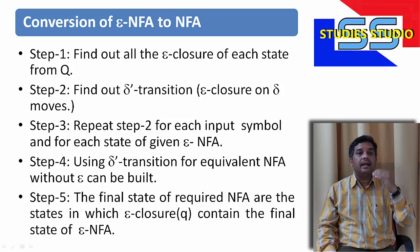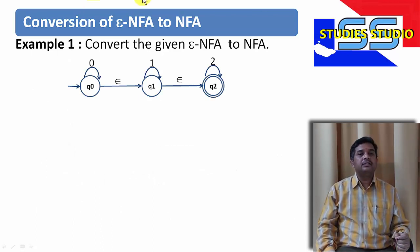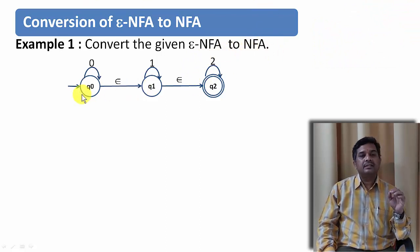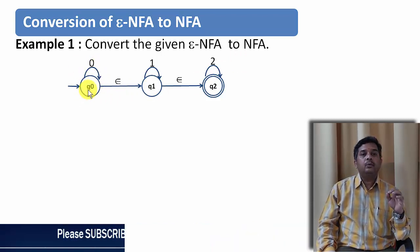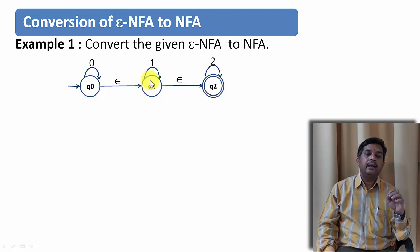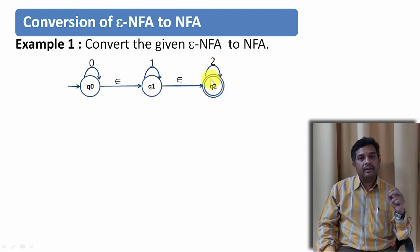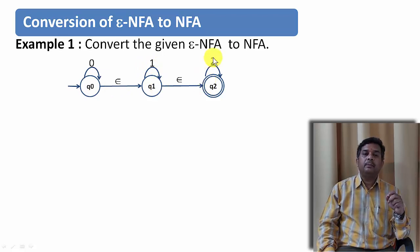So let us try to see an example and understand how we can convert an Epsilon NFA to NFA. Let us assume this is the given Epsilon NFA and we want to convert it to NFA. On Q0, on zero transition it stays at Q0, and with Epsilon transition you can go to Q1. On Q1, on 1 transition it stays at Q1, but with Epsilon transition you go to Q2, which is the final state. On Q2, on 2 transition it remains in Q2. This means the language accepts any number of zeroes followed by any number of ones followed by any number of 2s.